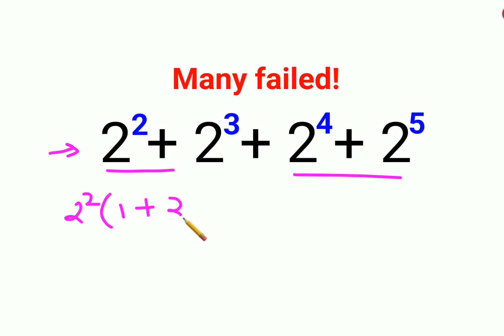I'm left with 1+2. Here also I can take 2^4 common and I'm left with 1+2. Now after all of this I can take (1+2) and 2^2 out.